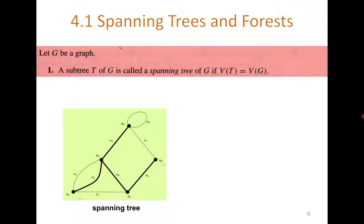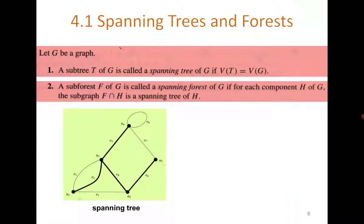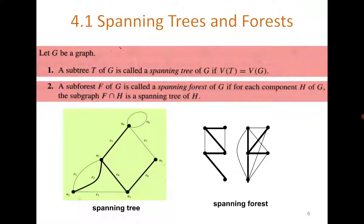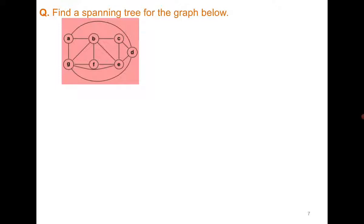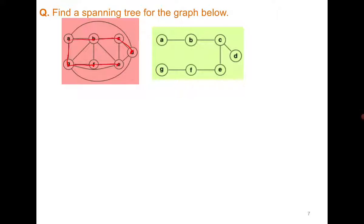Looking at this graph, the edges in bold along with the vertices represent the spanning tree of the given graph. The spanning tree is not unique. Similarly, we can talk of a spanning forest, where we look for a spanning tree of each of the components. To find the spanning tree of a given graph, we mark all the vertices and start connecting them such that no cycle is formed. This is one possible way — there could be many ways to form spanning trees.